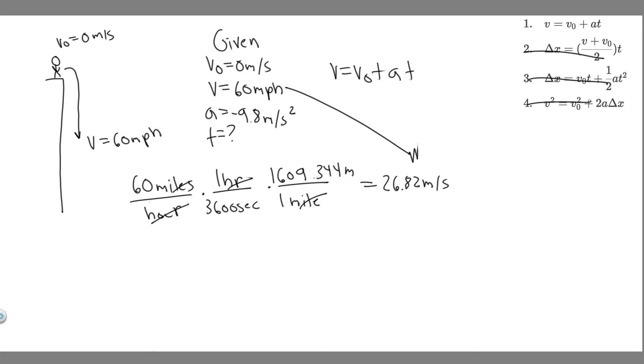So V, the final velocity, is 26.82, which is equal to the initial, which is 0. So 0 plus anything is still just this, so we can ignore it, plus the acceleration, which is minus 9.8, and then you want to multiply by t. So you can divide by minus 9.8. So divided by minus 9.8, you get 26.82, and then divide by minus 9.8. And so keep in mind, this value is going to be negative.